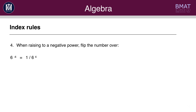Rule 4: when raising to a negative power you want to flip the number over. So if they give you 6 to the power of minus 4, this is the same as 1 over 6 to the power of 4.